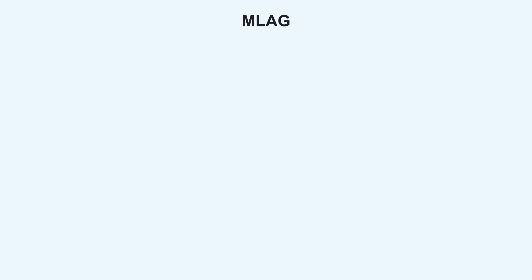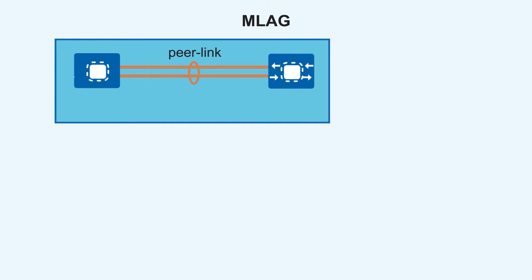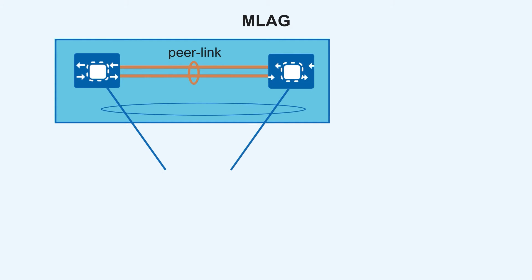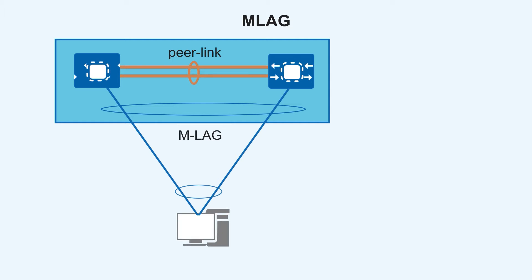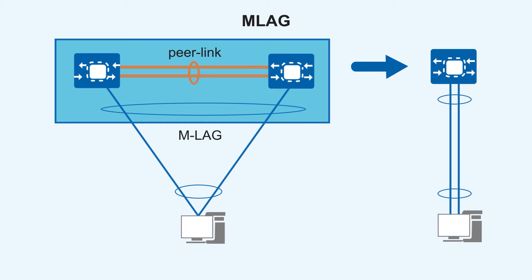MLag, or Multi-Chassis Link Aggregation Group, allows multiple network switches to work together as a single logical switch, providing redundancy and increased bandwidth. Simply put, the mechanism is to connect two or more switches via peer link and form a link aggregation group to act as a logically single device.